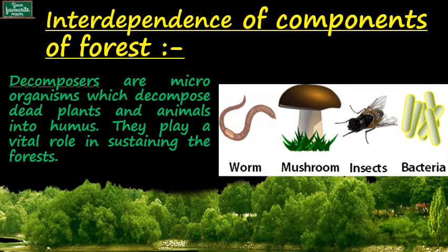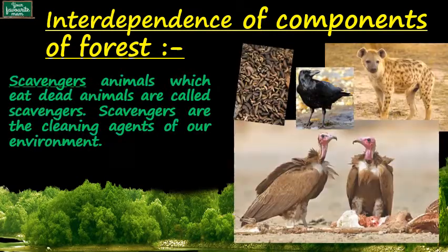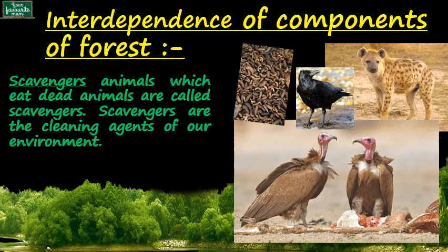These organisms, i.e. decomposers, break down the dead parts of plants and animals and turn them into simple substances. They play a very vital role in sustaining the forest. Lastly, we will talk about scavengers. They are those animals which eat dead animals like vulture, crows, jackals, hyena, and even some insects like ants, beetles, maggots, earthworms, and millipedes.